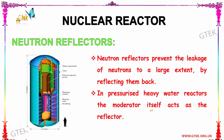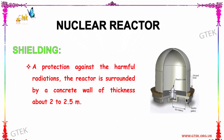Now let us see about the neutron reflector, another part of the nuclear reactor. The neutron reflector prevents the leakage of neutrons to a large extent by reflecting them back. In a pressurized heavy water reactor, the moderator itself acts as a reflector. Regarding shielding: for protection against harmful radiation, the reactor is surrounded by a concrete wall of thickness about 2 to 2.5 meters.